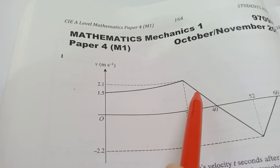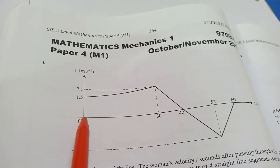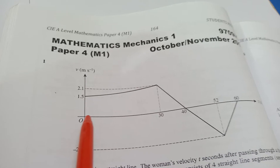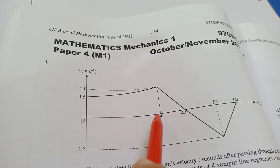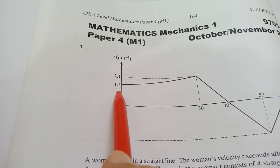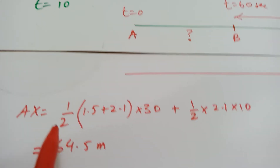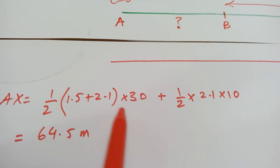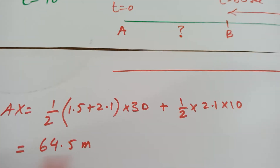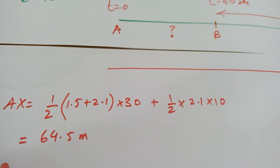To find distance AX I can't use just one equation since there are two stages. I'll find the area under the trapezium for the first 30 seconds and then add the area of the triangle for the next 10 seconds. The trapezium has parallel sides of 1.5 and 2.1, with height 30, so the area is ½ × (1.5 + 2.1) × 30. Adding the triangle area gives AX = 64.5 metres.